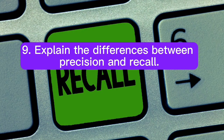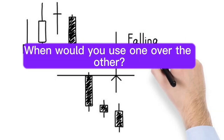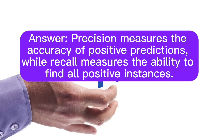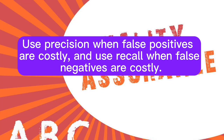Question 9: Explain the differences between precision and recall. When would you use one over the other? Answer: Precision measures the accuracy of positive predictions, while recall measures the ability to find all positive instances. The choice between them depends on the problem's specific needs. Use precision when false positives are costly, and use recall when false negatives are costly.